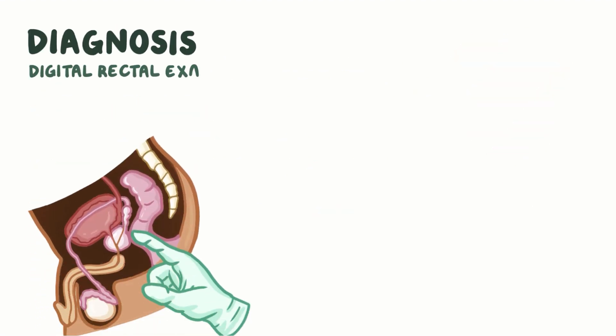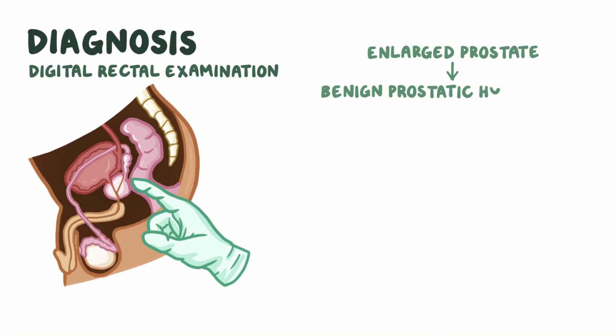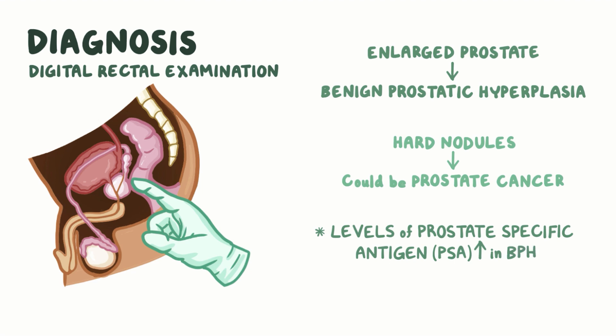Benign prostatic hyperplasia can be identified with a digital rectal examination, where a finger is inserted into the rectum to feel against the anterior wall of the rectum, which lies along the posterior prostate. An enlarged prostate could indicate benign prostatic hyperplasia, while hard nodules could be a sign of prostate cancer. Levels of prostate-specific antigen, or PSA, a substance produced by healthy prostate cells, are also elevated in benign prostatic hyperplasia, since there are more cells making the PSA.